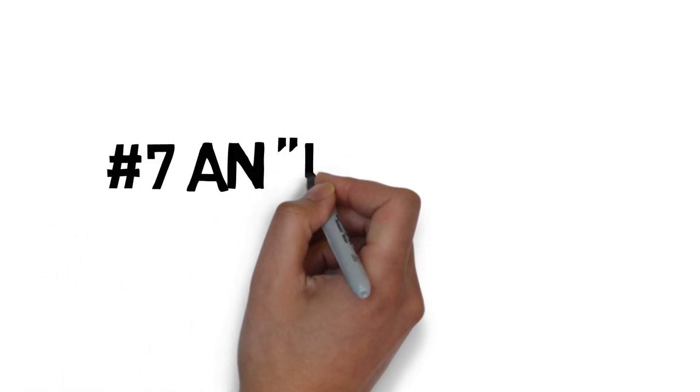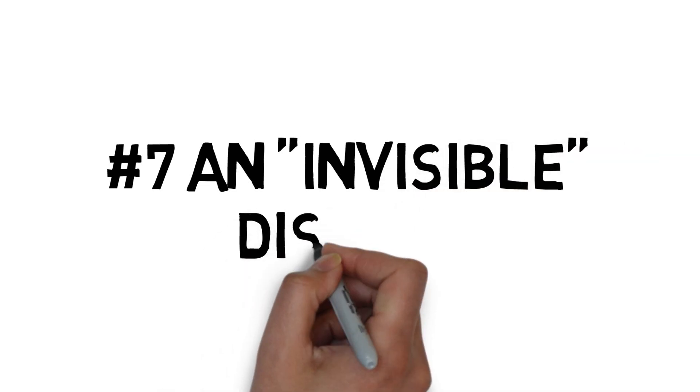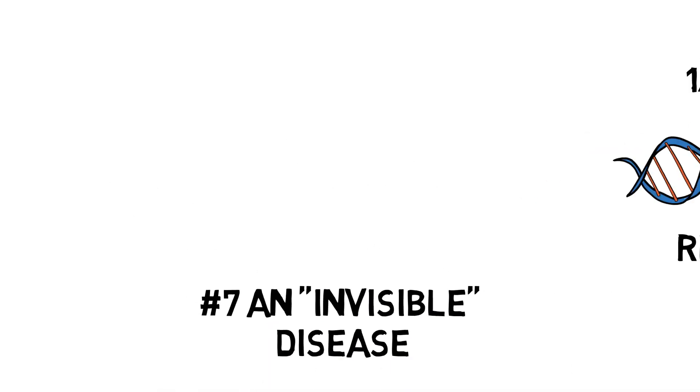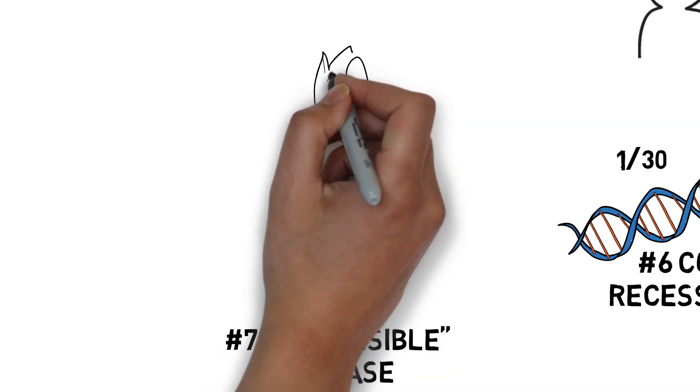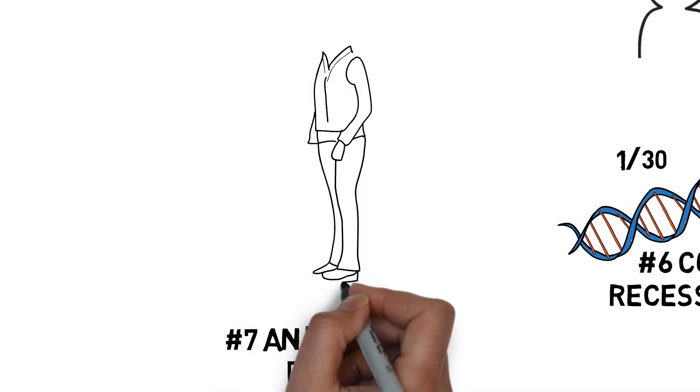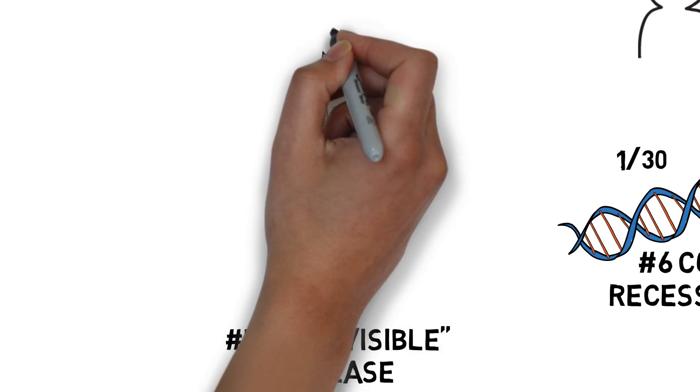Number 7. Cystic fibrosis is sometimes referred to as an invisible disease. This is because the symptoms manifest themselves more internally than externally. You generally can't tell that someone has cystic fibrosis just by looking at them.